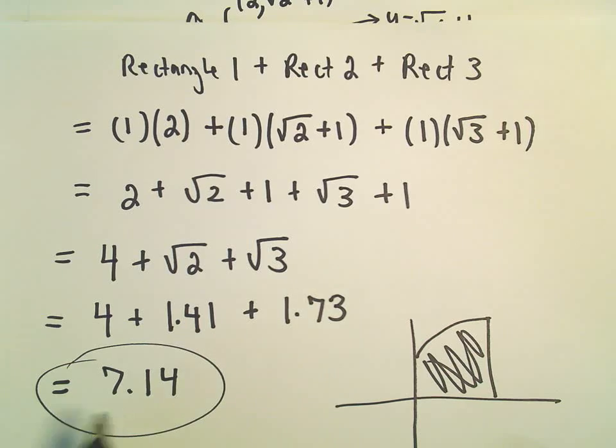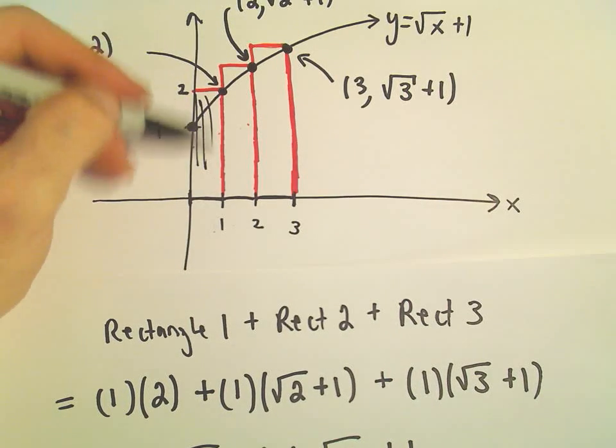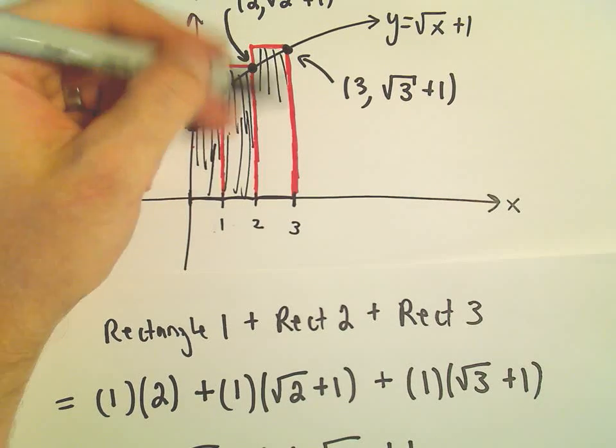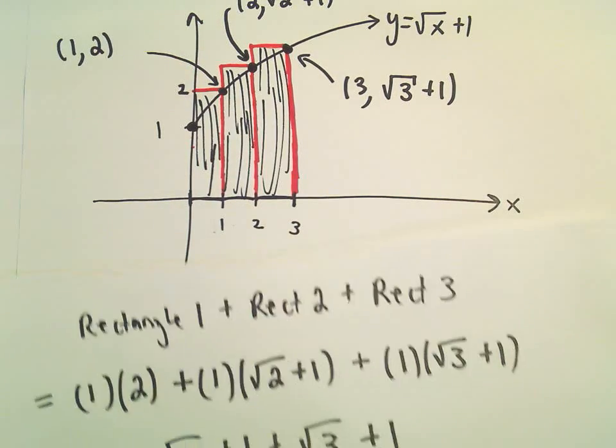Just based on the geometry, you can tell from our picture that we're getting what's called an overestimate. Clearly, the rectangles are a little bit too big.